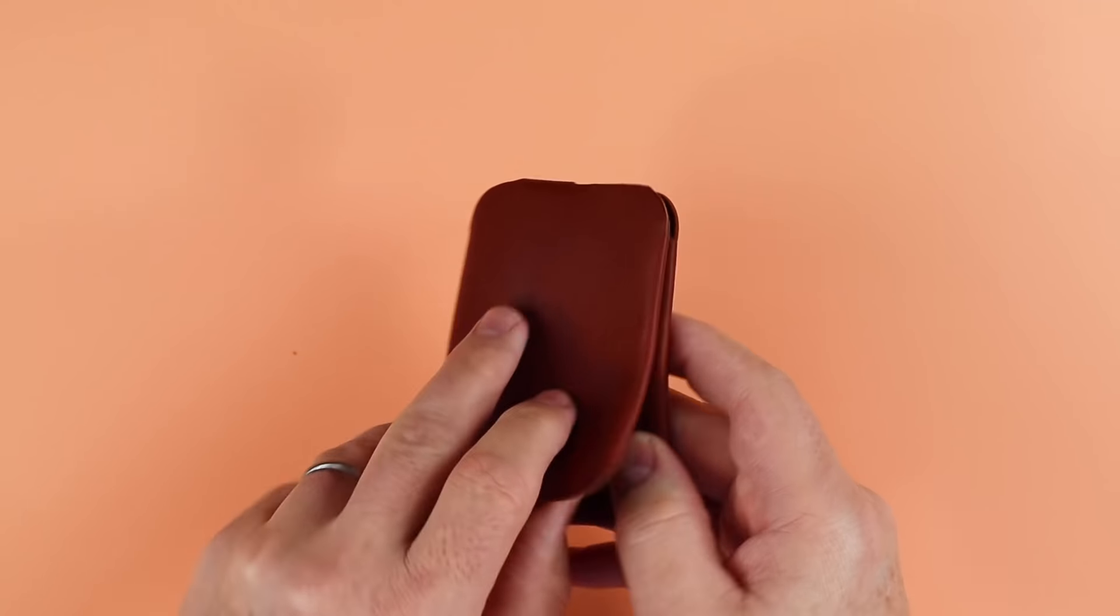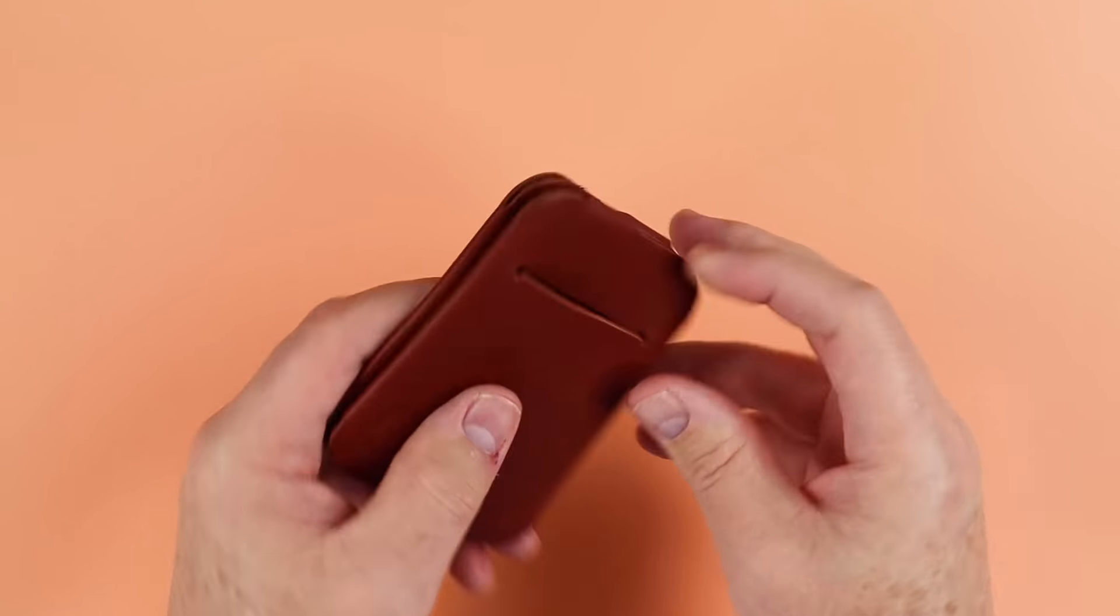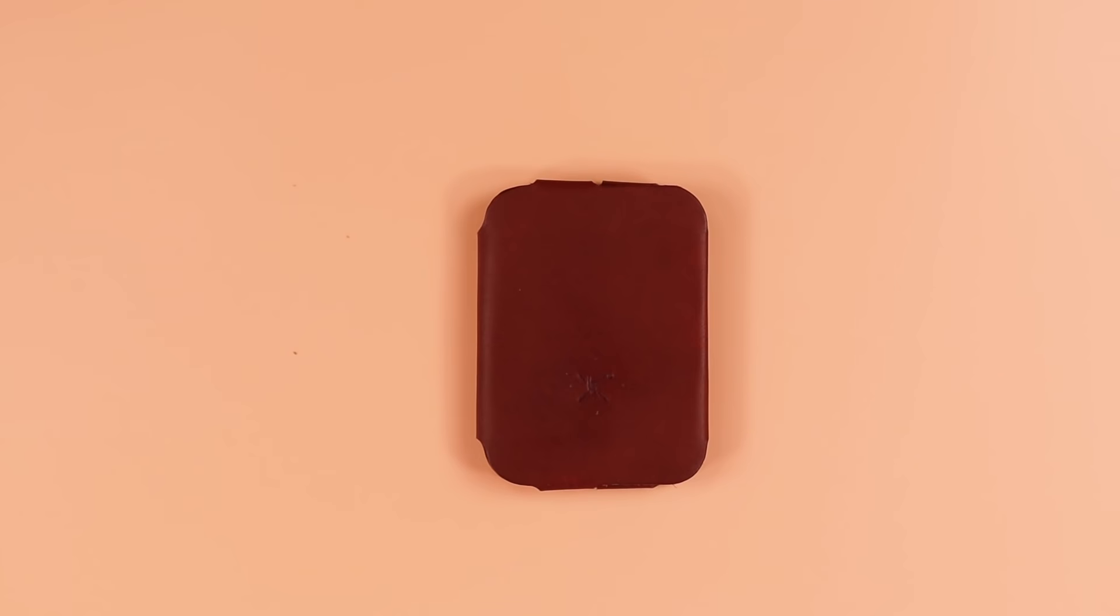And of course the wallet secures itself through this snap right here, which point then unless it's unsnapped, you're not going to have anything fall out of here except potentially for here. But it's a quick access card slot and it inserts into the interior and that is a quick review of the features of the number one.